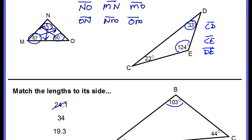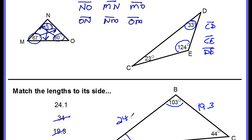Sorry about that — the side length along that side is not 24.1, it's actually 34. So 34 goes there. Since 34 degrees is the smallest angle, the smallest side — 19.3 — would go opposite it. Which means the middle angle, 44 degrees, has the side opposite it as the middle sized side, which is 24.1.